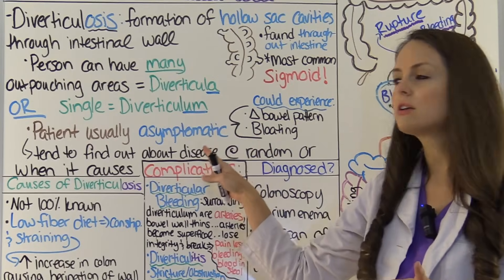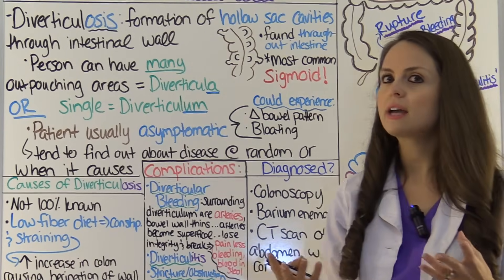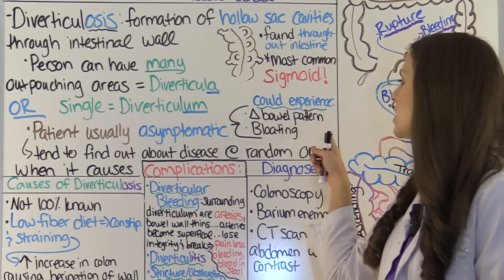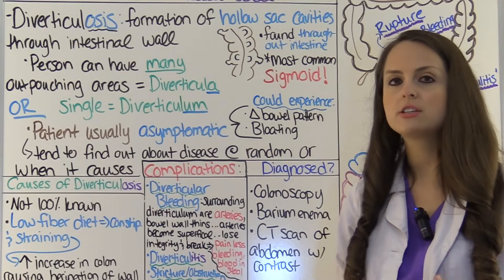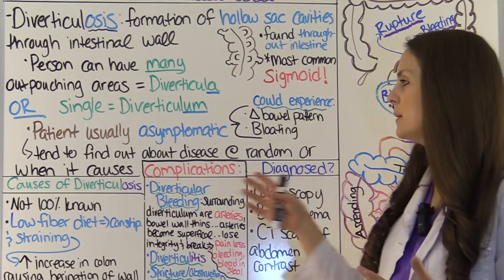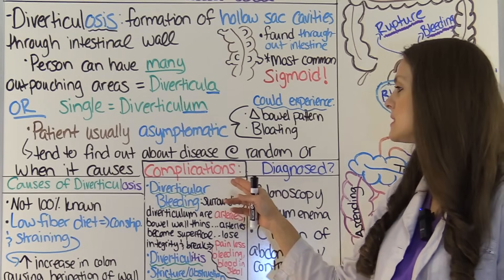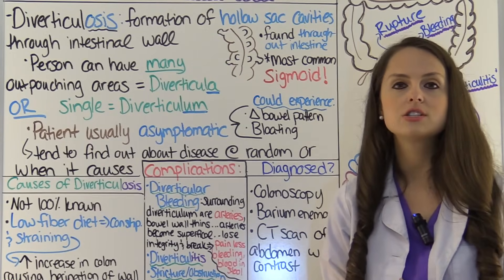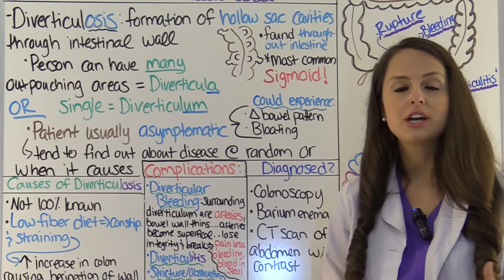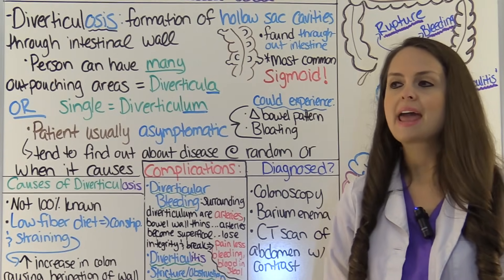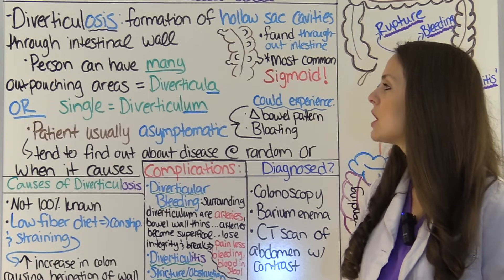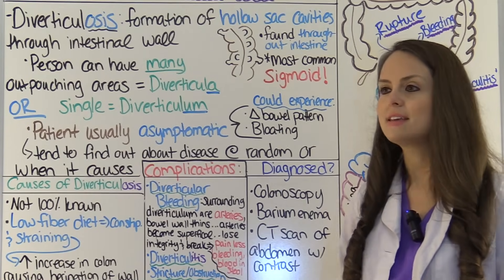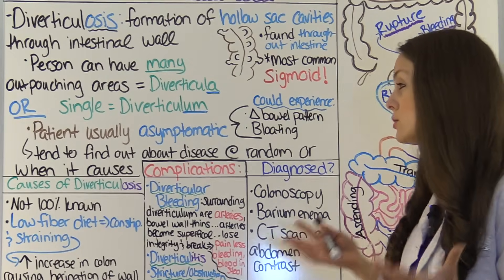When patients have diverticulosis, they're usually asymptomatic — they don't usually have symptoms. And if they do have symptoms, they're usually random symptoms they may attribute to something else, like a change in their bowel pattern, constipation, diarrhea, or abdominal bloating. Many people tend to find out about diverticulosis at random or when they develop one of these complications. I've had many patients who went for a lower GI series and were really shocked to find out they had this.